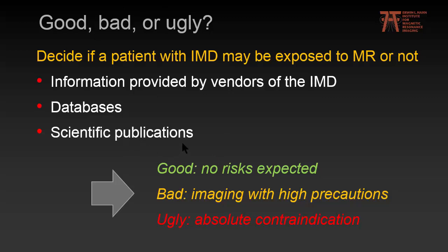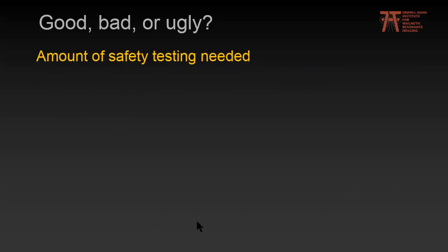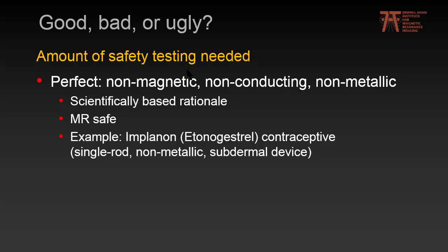Based on all this, we can separate whether an implant is good — where no risks are expected — bad, where imaging may be allowed only with high precautions, or ugly — an absolute contraindication. Good, bad, or ugly can also be viewed with regard to the amount of safety testing needed. I'd like to introduce a fourth group: the perfect implant — non-magnetic, non-conducting, non-metallic — for which a scientifically-based rationale is adequate to say it is MR-safe.